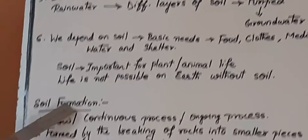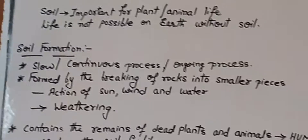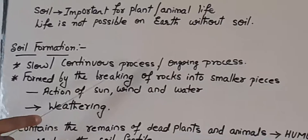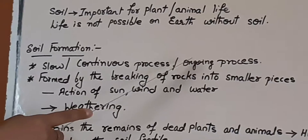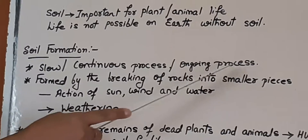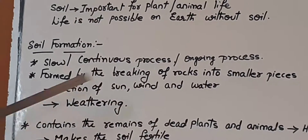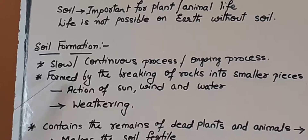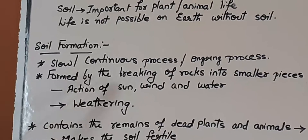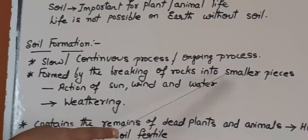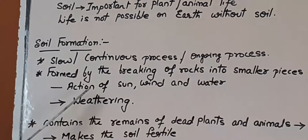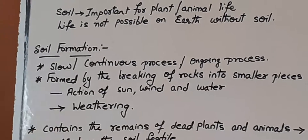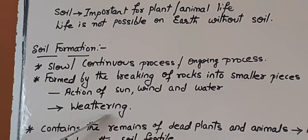Next, we will see how soil is formed. Soil formation is a slow and continuous process — an ongoing, never-ending process. Soil is formed by the breaking of rocks into smaller pieces by the action of sun, wind, and water. This process is called weathering.